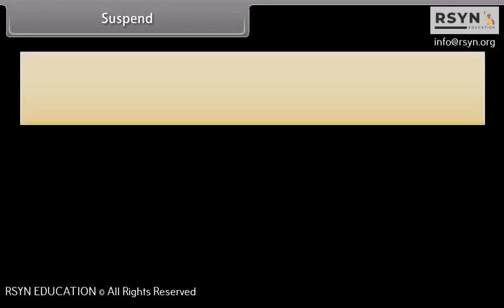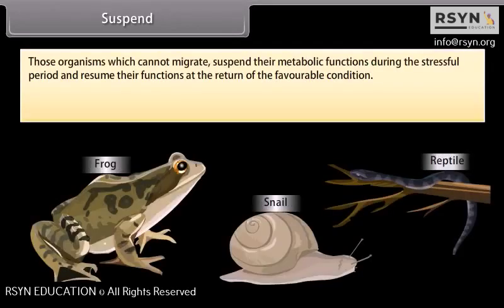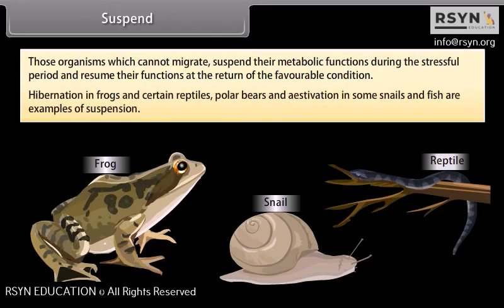Those organisms which cannot migrate suspend their metabolic functions during the stressful period and resume their functions when favorable conditions return. Hibernation in frogs and certain reptiles and polar bears, and estivation in some snails and fish, are examples of suspension.